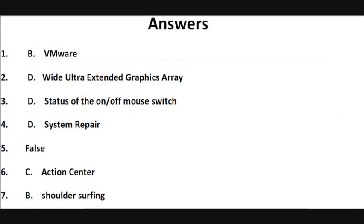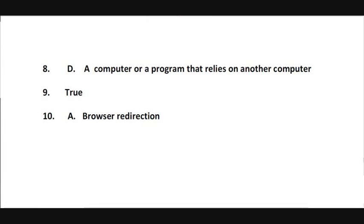Now here are the answers. Number 1 is B, VMware. Number 2 is D, Wide Ultra Extended Graphics Array. Number 3 is D, Status of the On-Off Mouse Switch. Number 4 is D, System Repair. Number 5 is False. Number 6 is C, Action Center. Number 7 is B, Shoulder Surfing. Number 8 is D, A Computer or Program that Relies on Another Computer. Number 9 is True. Number 10 is A, Browser Redirection.